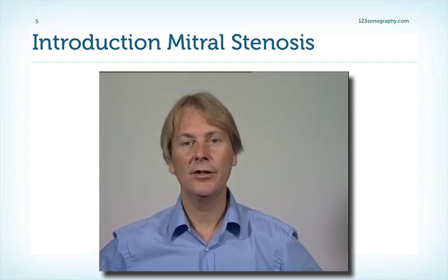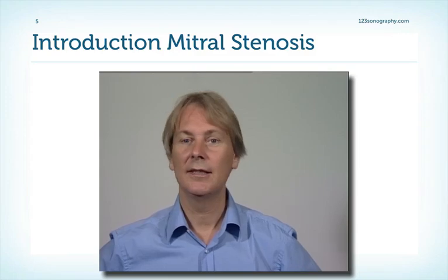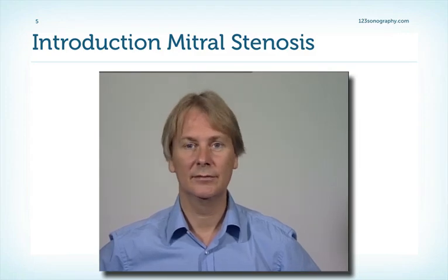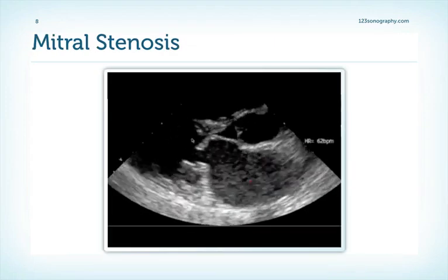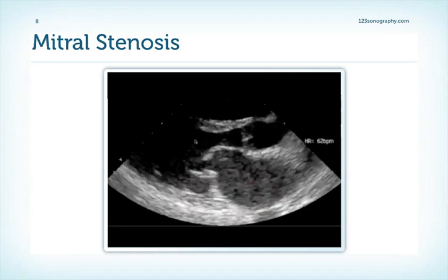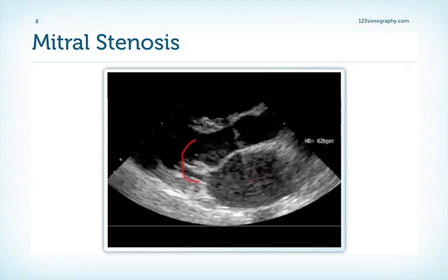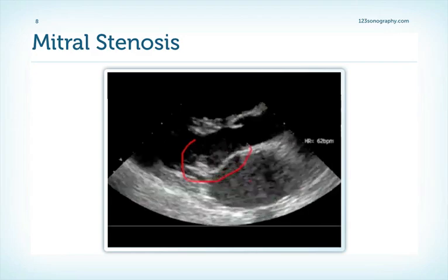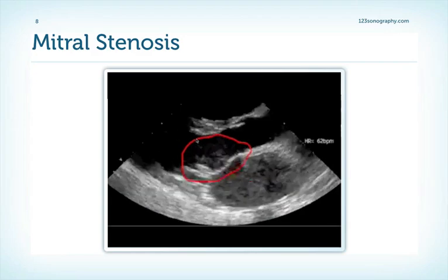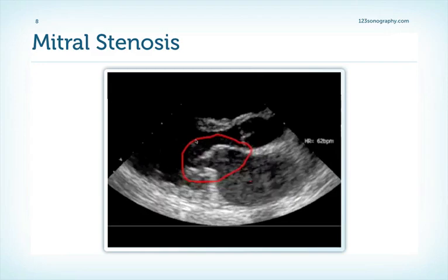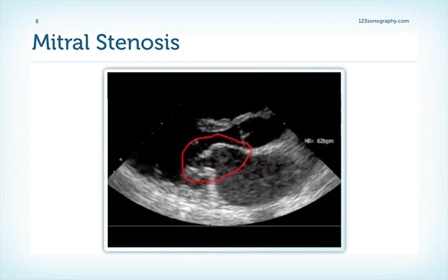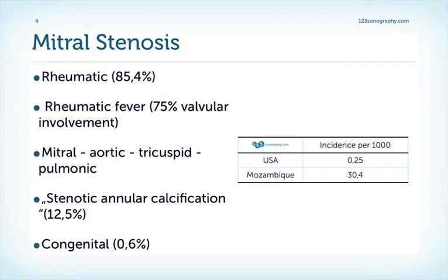In this chapter we'll talk about the background of rheumatic heart disease and mitral stenosis, and also on how to diagnose it. You'll see it's very simple — the diagnosis of mitral valve stenosis is actually pretty easy in most cases. One look and you can see the hallmark of this pathology: doming of the anterior mitral valve leaflet. But there's much more to mitral stenosis.